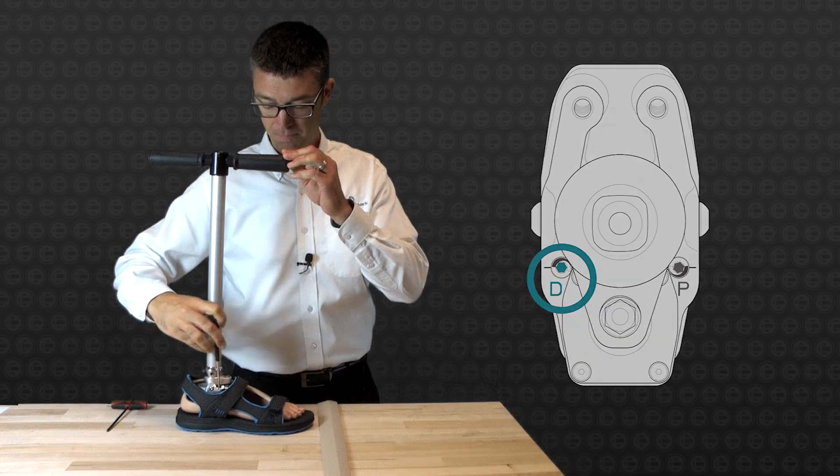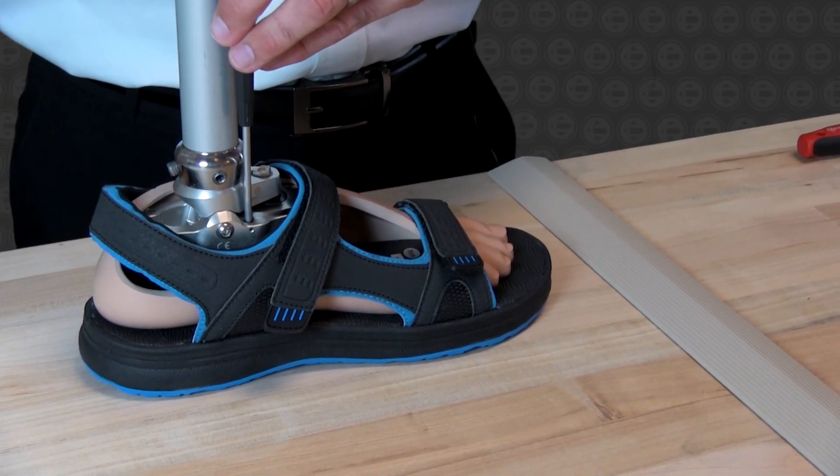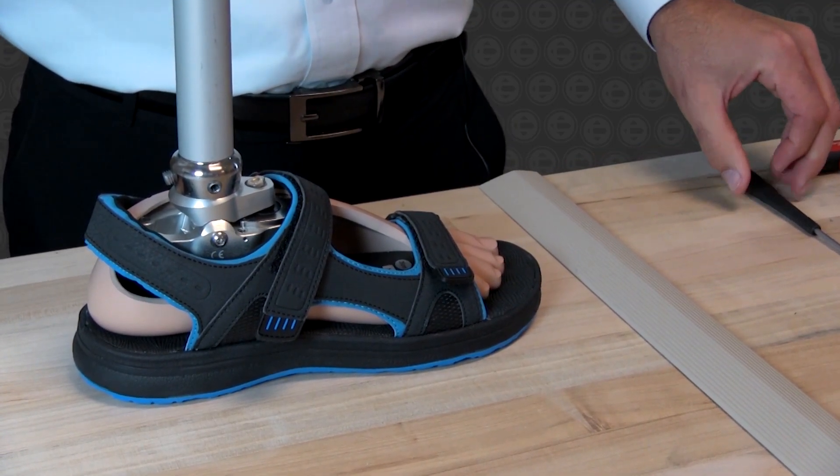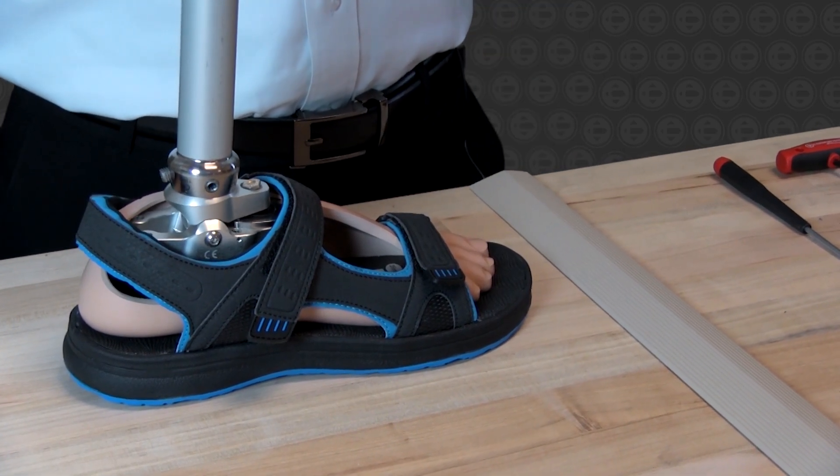So we can then adjust the hydraulic dorsiflexion range, as this is adjustable separate from the plantar flexion, to increase the hydraulic resistance to dorsiflexion to provide some additional anterior support to the patient.